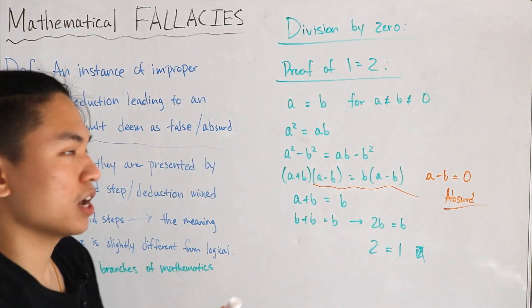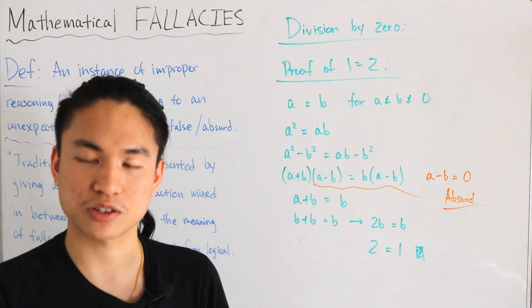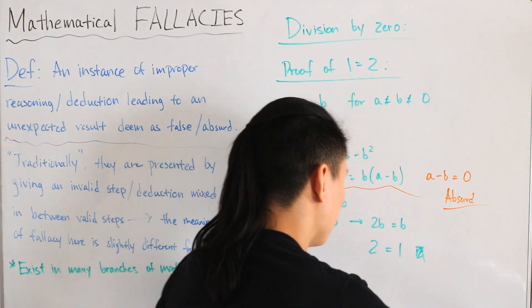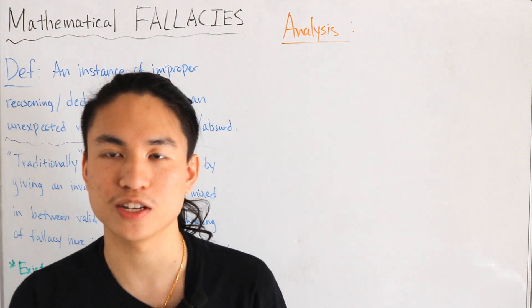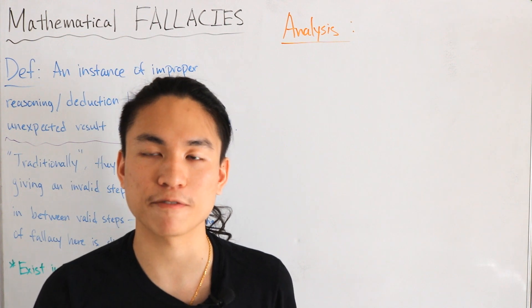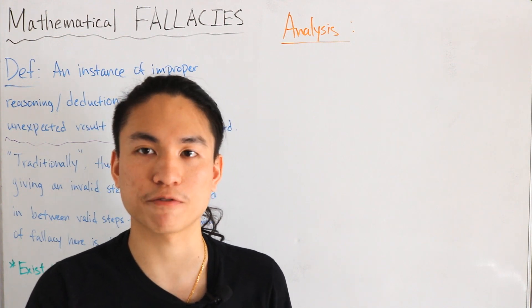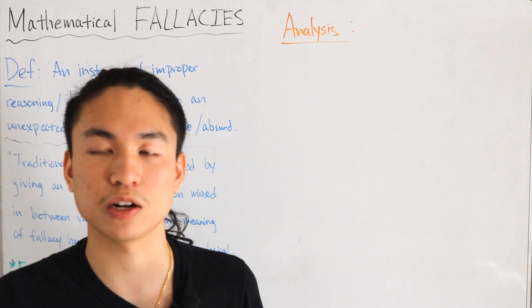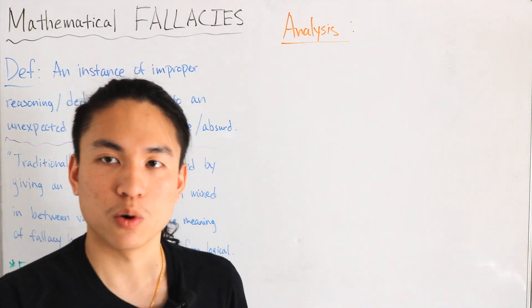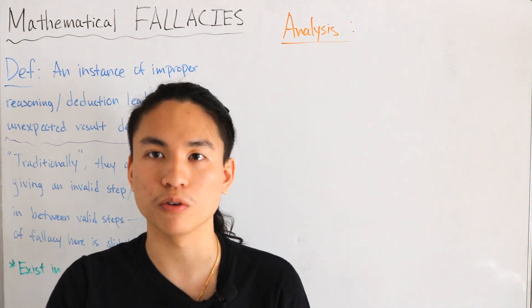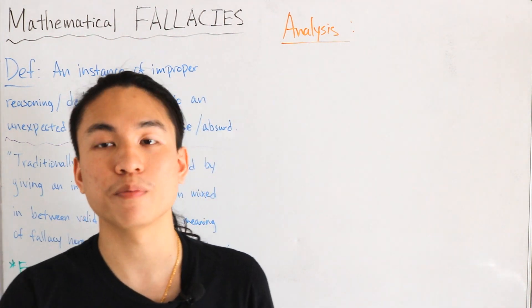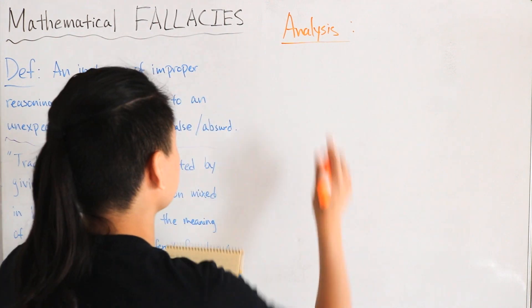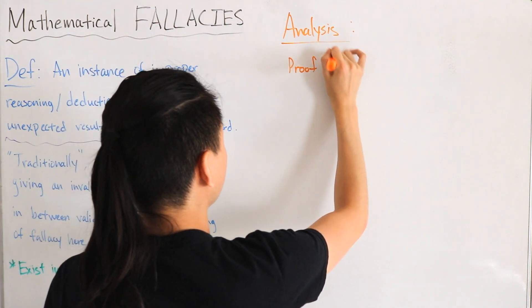That's the most common division-by-zero fallacy that mathematicians know of. Moving on, the next example is from mathematical analysis — basically advanced calculus involving limits and integration. This one is actually my personal favorite; it was the first time I ever encountered it. If we ignore the properties of differentials and integrals, some fallacies arise. The specific one we'll show is a proof that 0 = 1 using analysis.